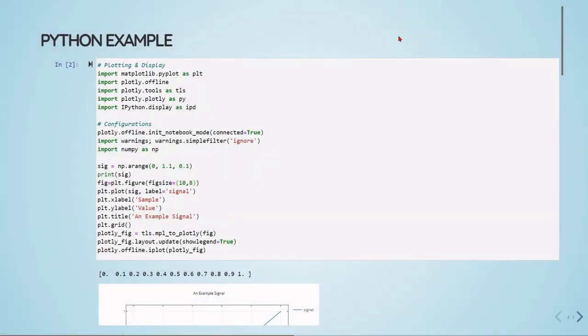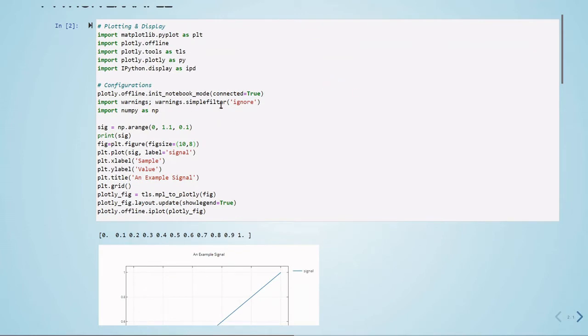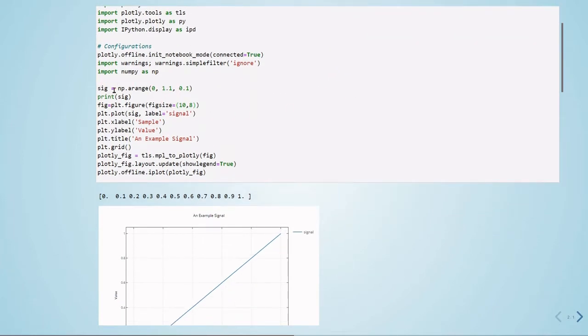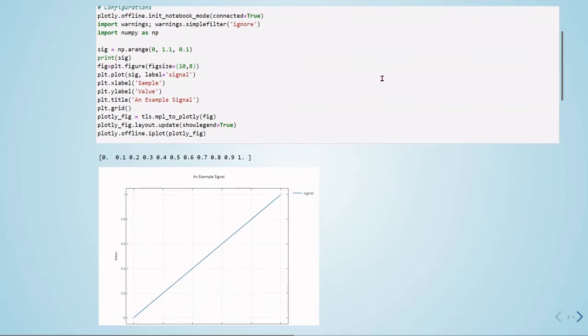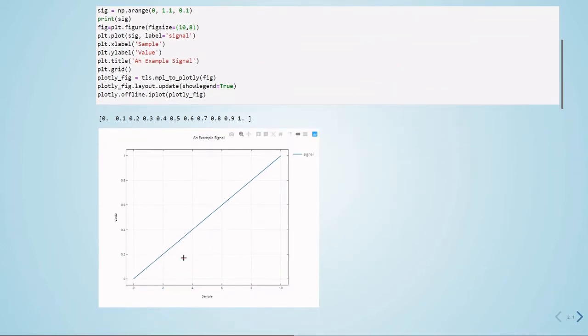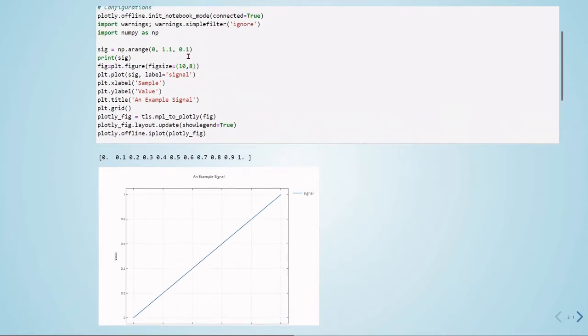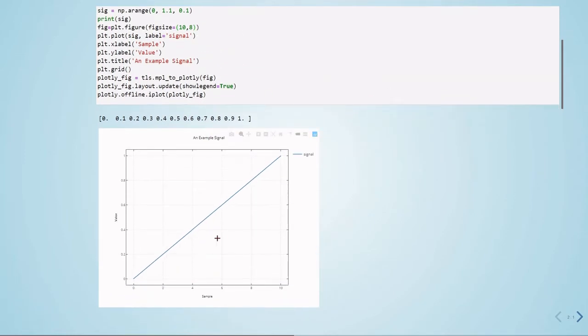Let's have a Python example to understand better the matched filter. So here we are importing matplotlib to plot. We are also using numpy. And we are defining the signal, our original signal that we want to detect. It's a ramp that goes from 0 to 1.1 in steps of 0.1. And here we have a sample, our value, so this is our original signal.